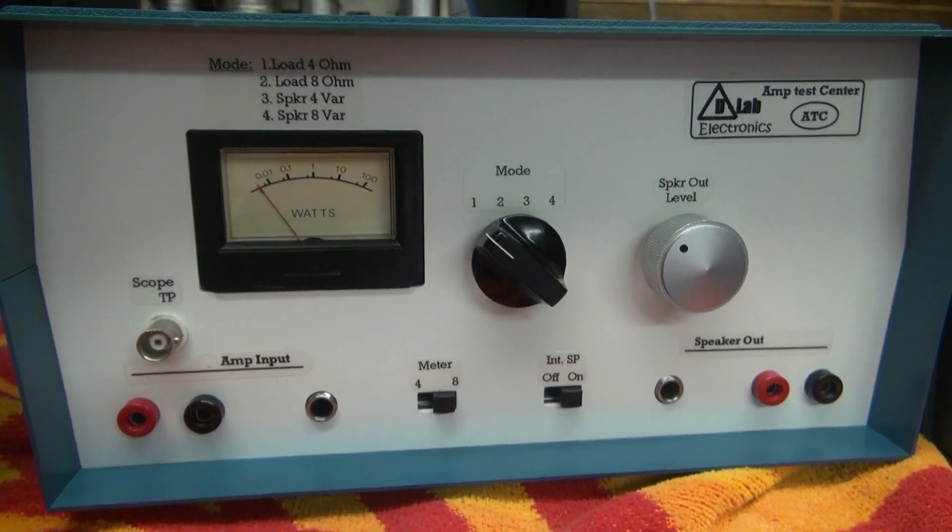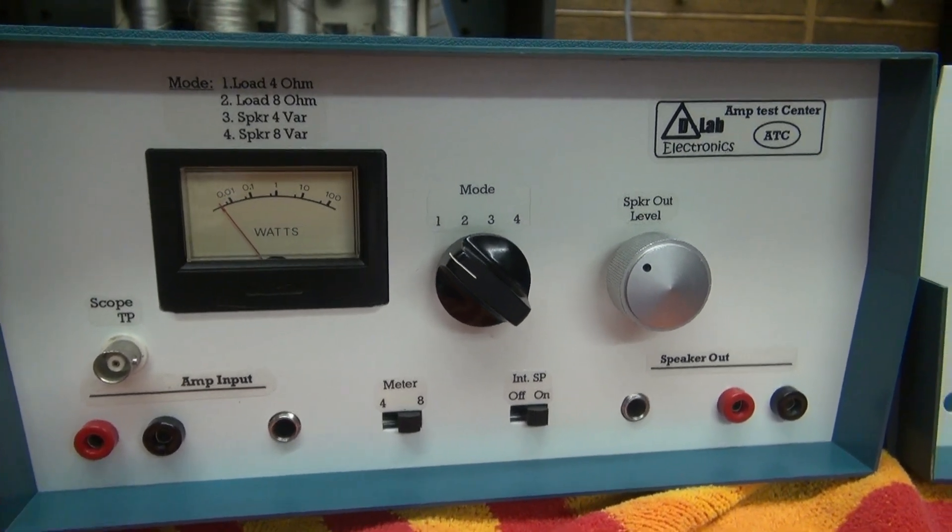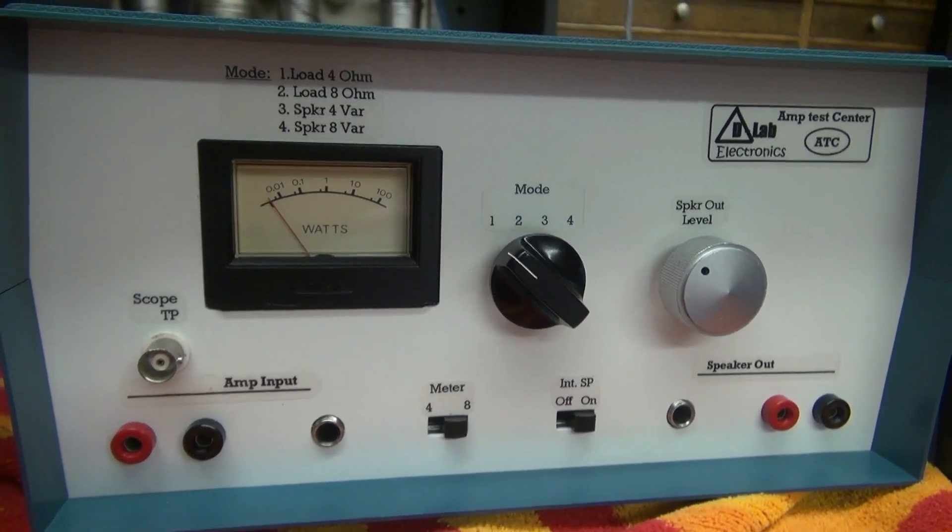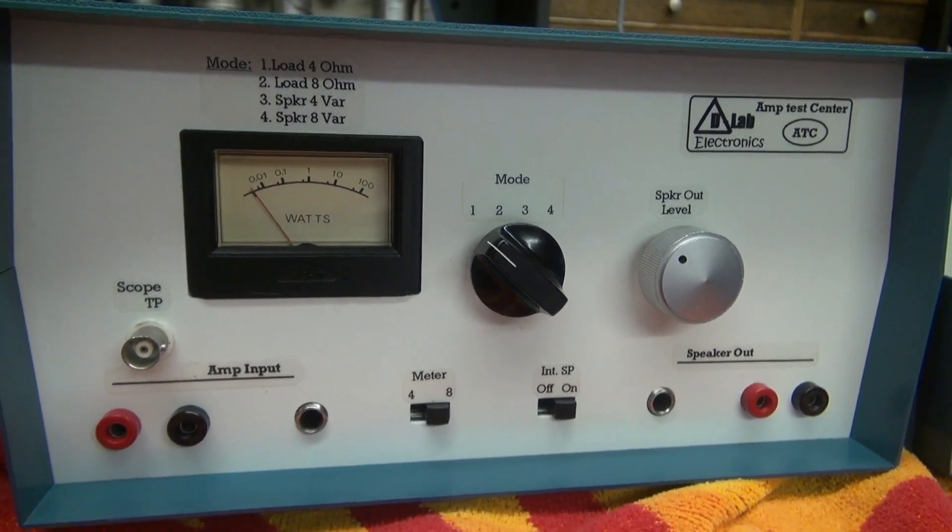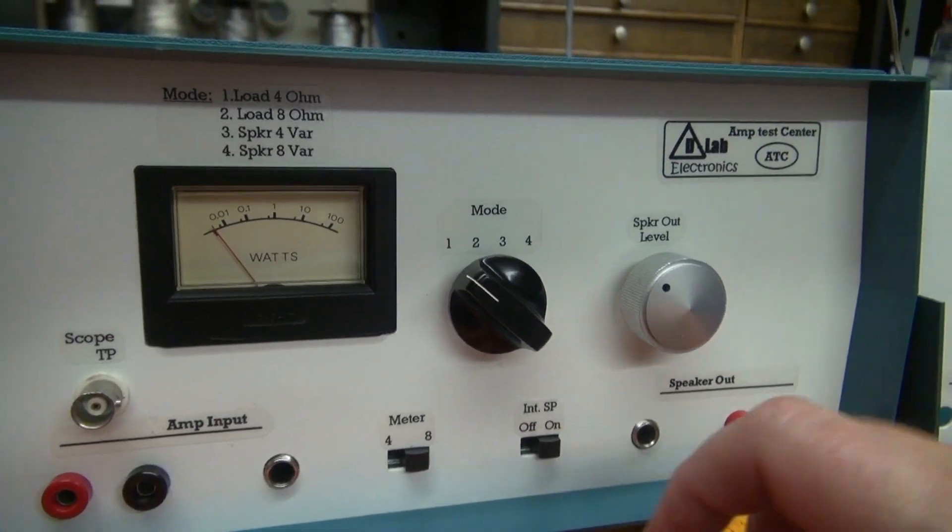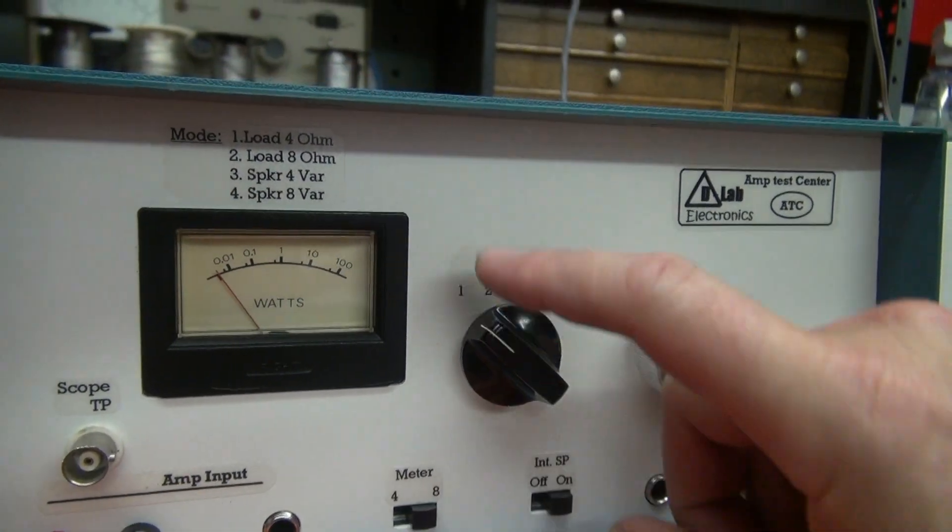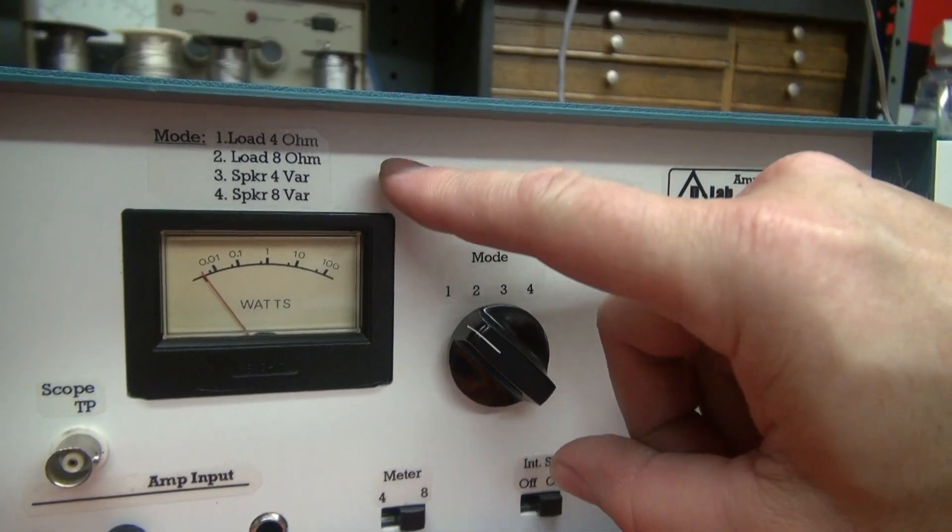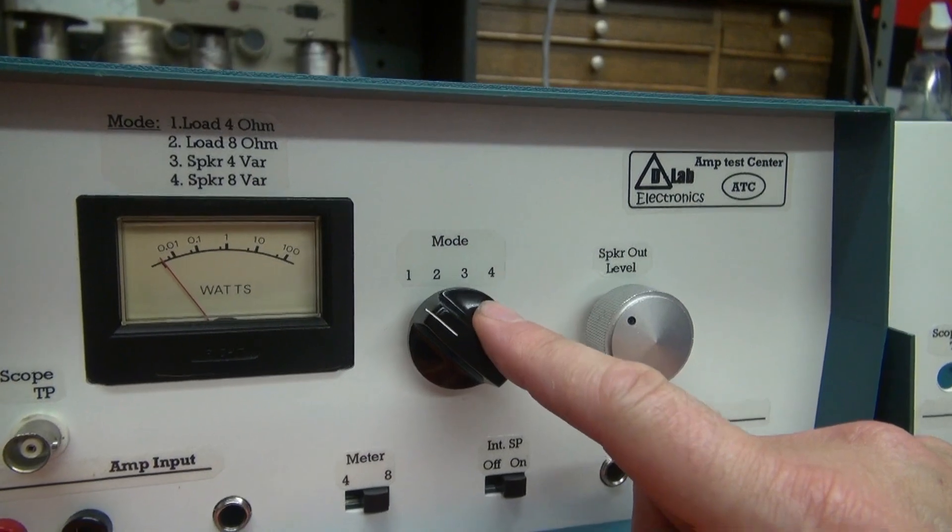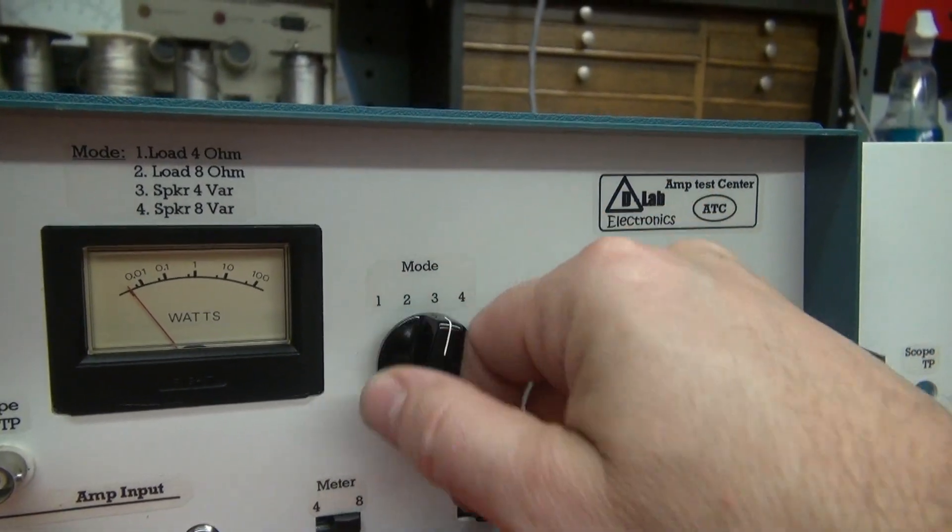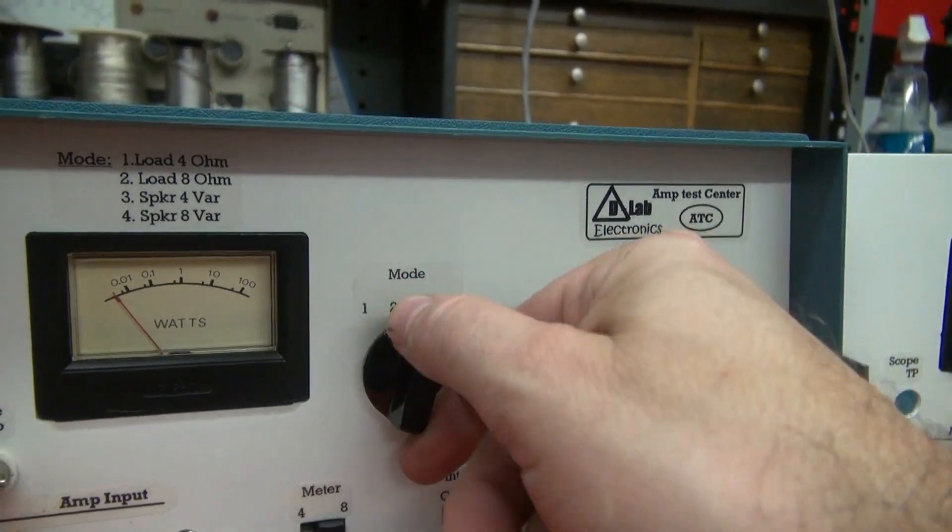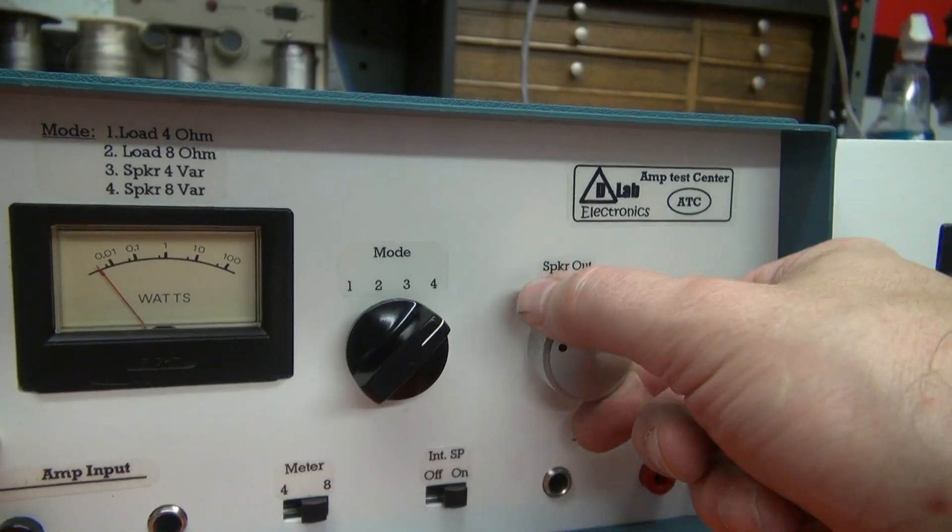So let's go through the features of the new D-Lab Monaural amp test center. Now you guys said, hey, if I'm working on my amp, I want a 4 ohm and an 8 ohm load, not just an 8. That's what my first test center had. This one does have 4 and 8 ohm modes. So if you take a look up here, you'll see the different modes, which correlate with the mode switch. So mode one, you're a load 4 ohm. There's load 8 ohm. Then you have the speaker 4 ohm, which is variable. And a speaker 8 ohm, which is also variable.